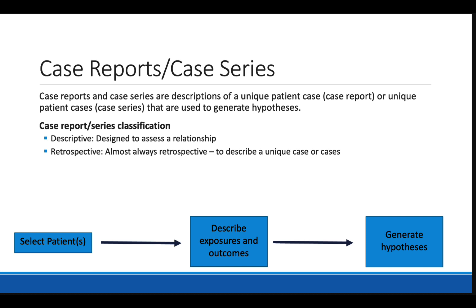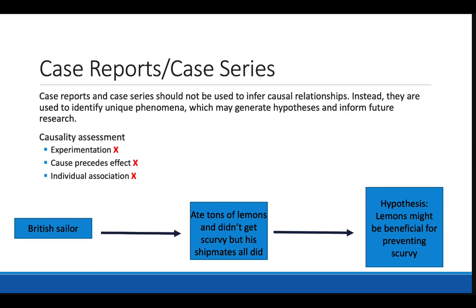Case reports and series are always descriptive and almost always retrospective, although in certain rare cases — like the experimental treatment of one patient with a new medication — it could be prospective. They are used to describe unique phenomena, and results can be used to perform further research into a given topic. However, these studies should never be used to infer causal relationships as they fulfill none of our causal criteria. In the scurvy context, a physician might write a case report about a sailor with a lemon obsession who is the only person on a ship to not develop scurvy, which might then justify future cohort or randomized control trials.